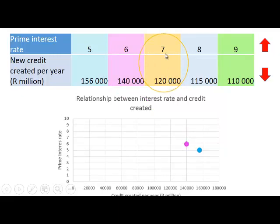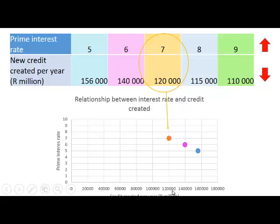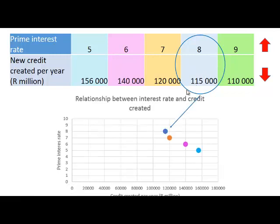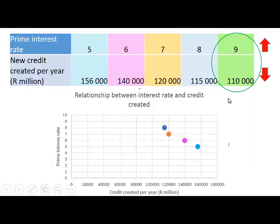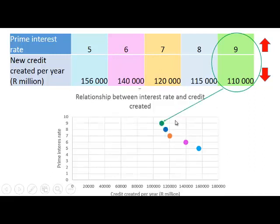At an interest rate of 7%, 120,000,000,000 rand worth of new credit was created. When the interest rate went up to 8%, 115,000 million rand worth of new credit was created. Then the last green point: when the interest rate level was 9%, 110,000 million rand worth of new credit was created.